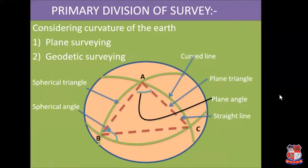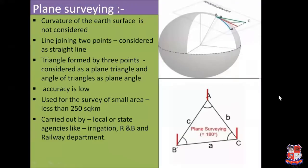Now let us discuss the primary division of surveying. Keeping in mind the curvature of the earth, surveying is divided into two divisions: one is plane surveying and the second is geodetic surveying, as shown in the figure on the slide. In plane surveying, the curvature of the earth surface is not considered — that means the curvature of the earth surface is not taken into account, and lines between two points are always straight lines.